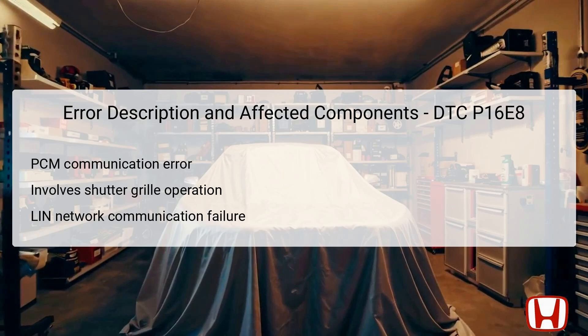The error code P16E8 specifically points to a malfunction in communication via the LIN, which stands for Local Interconnect Network. This is a communication protocol used in vehicles to facilitate communication between various electronic components without complex wiring. The error implicates the PCM and the shutter grille, which are vital for efficient engine performance and airflow management. The PCM interprets signals from multiple sensors and manages the operation of the shutter grille, and any interruption in this communication can affect the control strategy employed by the PCM, impacting overall vehicle performance.